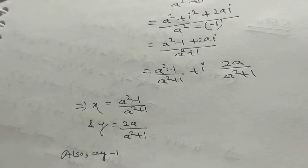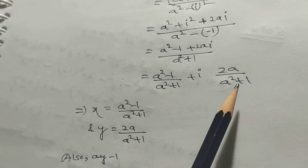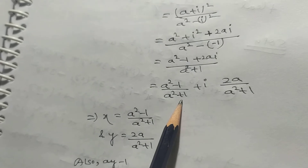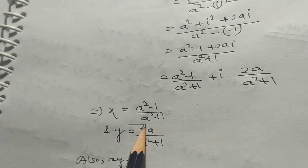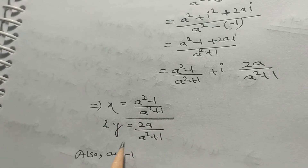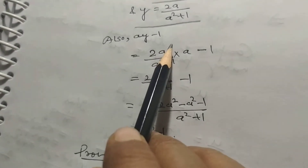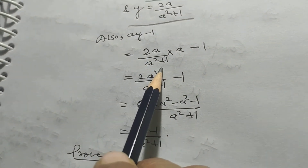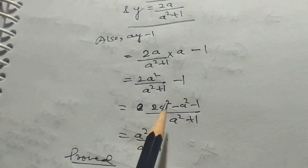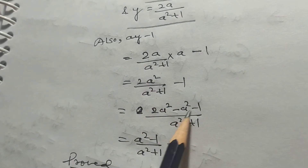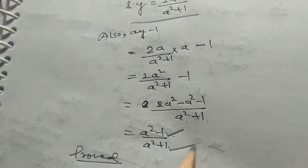Now we express it in standard form, that is in the form of x+iy. So it becomes (a²-1)/(a²+1) plus i·2a/(a²+1). So x = (a²-1)/(a²+1) and y = 2a/(a²+1). Also, ay-1 = (2a/(a²+1))·a - 1 = (2a²-(a²+1))/(a²+1) = (a²-1)/(a²+1), which equals x. Hence proved.